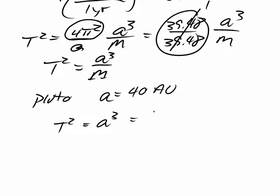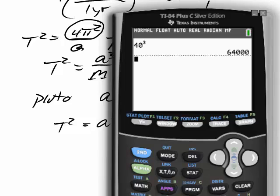T squared equals a cubed. So, we have 40 cubed. 40 cubed is 64,000. And then we take the square root of that to get about 253, 250.